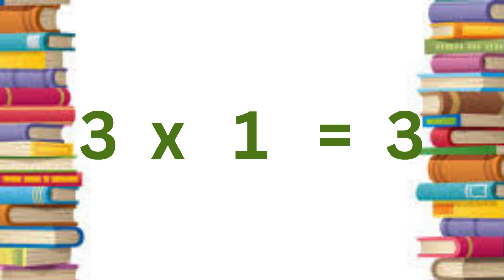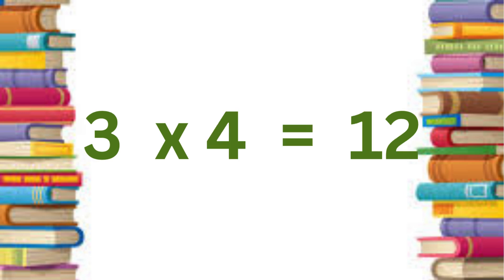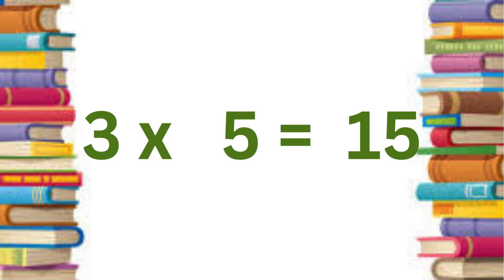Three ones are three. Three twos are six. Three threes are nine. Three fours are twelve. Three fives are fifteen.